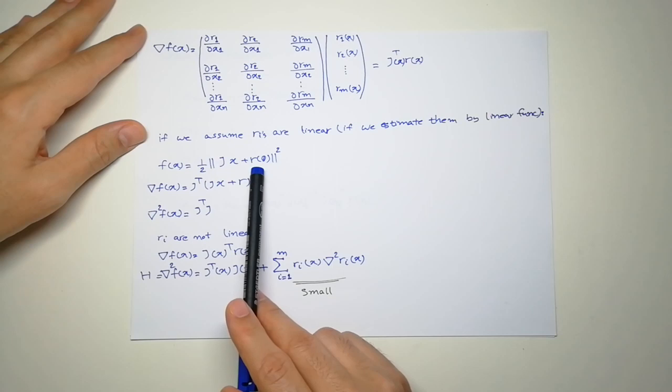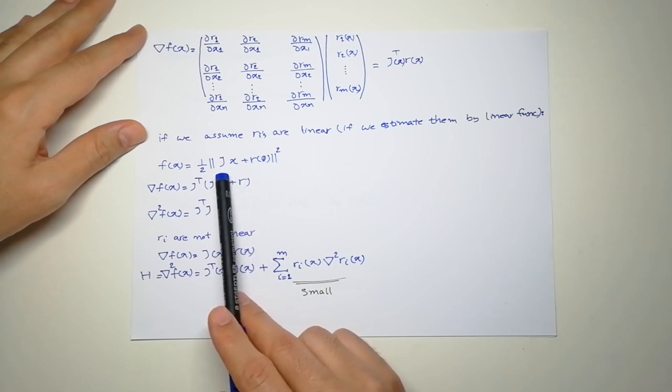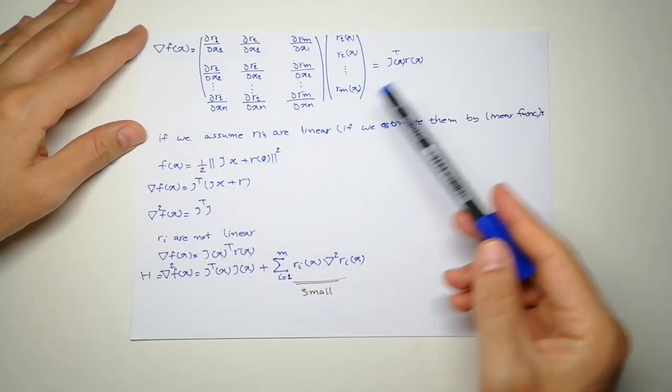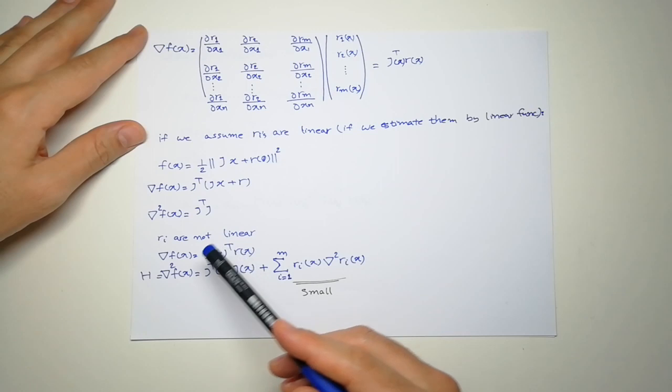We can approximate at point zero and the Jacobian is a fixed number, not a function. So all these values will be fixed because if it's linear, the derivative will be the same everywhere.